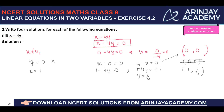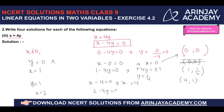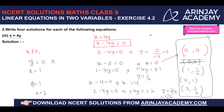If y equals 1, then x minus 4 into 1 equals 0, so x equals 4. Solution: (4, 1). Now taking x equal to 2: 2 minus 4y equals 0, giving 4y equals 2, so y equals 1/2. When x is 2, y equals 1/2. These four values — (0,0), (1, 1/4), (4, 1), (2, 1/2) — are the solutions of the equation x equals 4y.